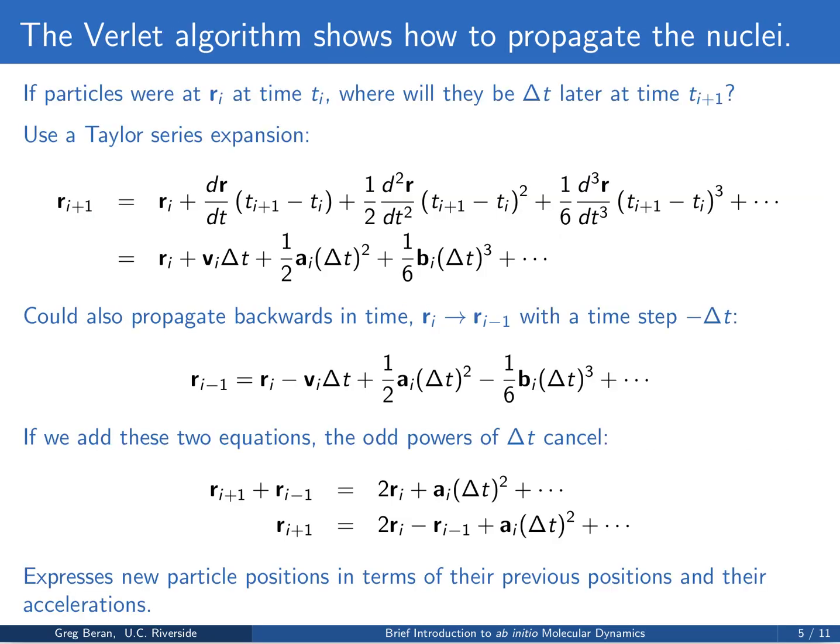To give a sense of how this works, I want to show the Verlet algorithm for how we propagate the nuclei. Consider that we have the particles at some position R_i at time T_i, and we can ask where those particles will be some delta T time later at time T_{i+1}. To figure this out, we use a Taylor series expansion representing the coordinates at the new time R_{i+1} in terms of the old coordinates R_i, plus correction terms depending on the first derivative of position with respect to time, the second derivative, the third derivative, etc., multiplied by increasing powers of delta T.